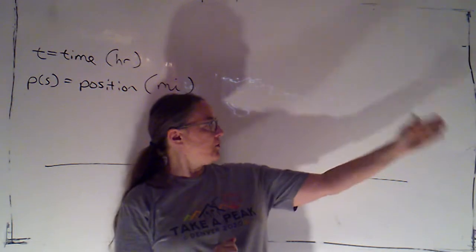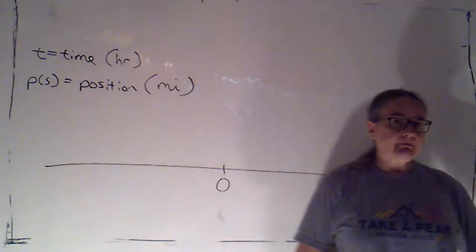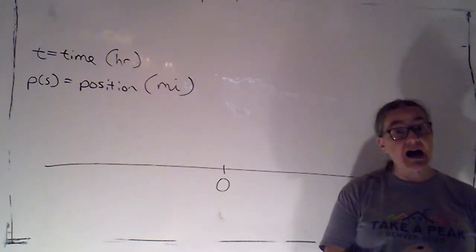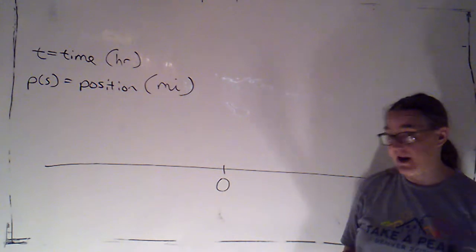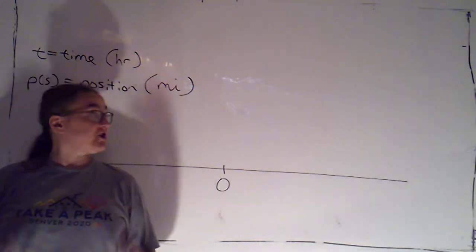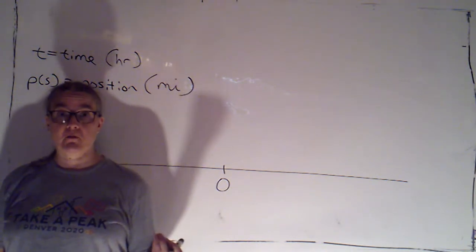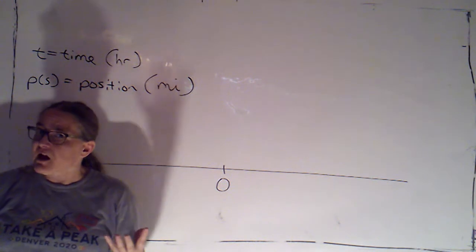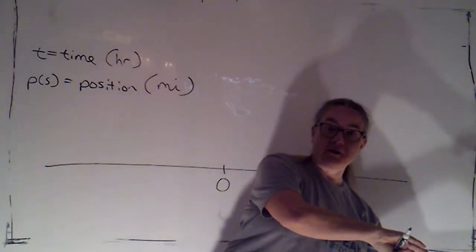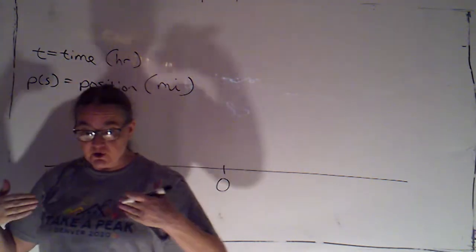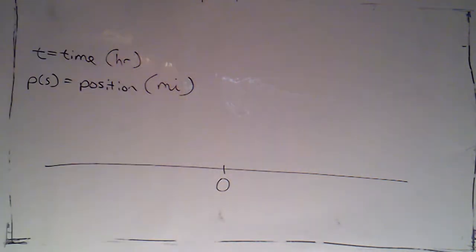Let's suppose I define north to be the positive direction. So now my position would be represented by a positive number because I am north of home. Let's suppose south is the negative direction, so now my position is negative — I am south of home. Those are the only two directions, because we only have two signs: plus and minus. So I can move north or I can move south. But if I were to take a step forward — which would be east — by the magic of video editing, you can see that I cease to exist, because there is no direction other than north or south.